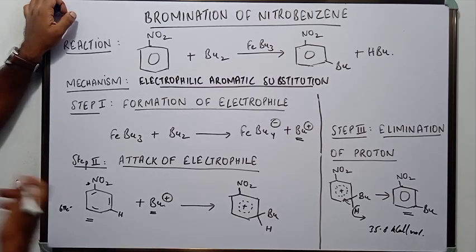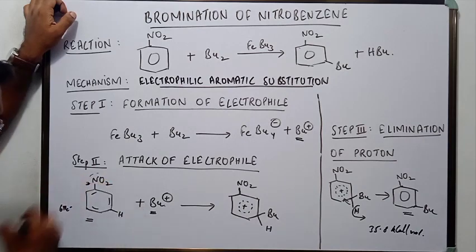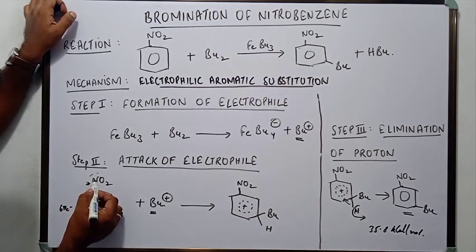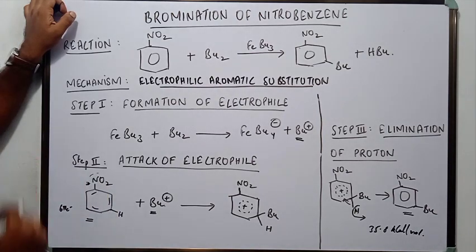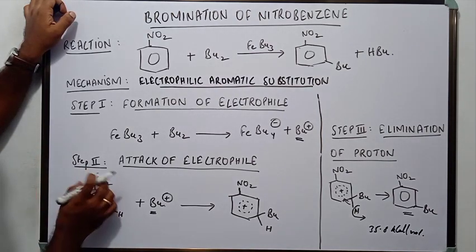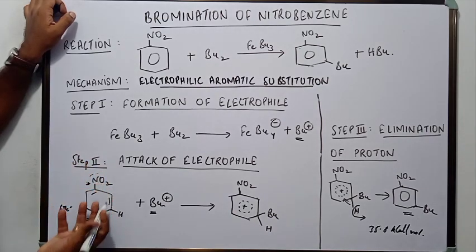But what happens here? There is one more group that is present here which is the Nitro group. Nitro group if you are looking at N it is electronegative. Oxygen also is electronegative. All these three atoms are electronegative which pulls the electrons of the benzene ring towards itself.